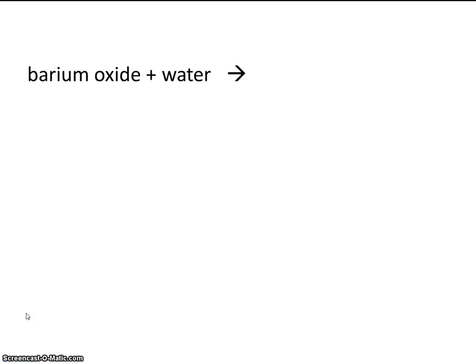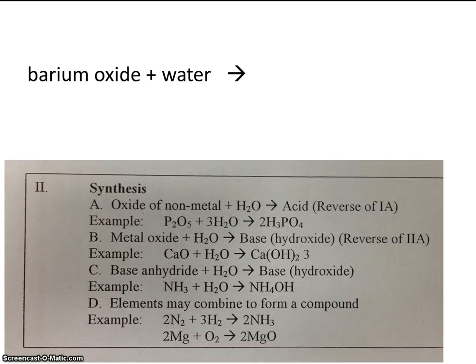Alright, let's try one more problem. Barium oxide plus water. Now, do you think barium oxide plus water most resembles example B or example D? Well, we have barium oxide. And barium is a metal, so we have a metal oxide. So, of course, we're dealing with example B.